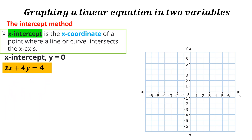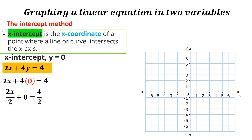Given the equation 2x plus 4y is equal to 4, since we need to set y to 0, we substitute it by 0. It will become 2x plus 0 is equal to 4. Since we will be getting the value of x, we need to apply the division property of equality using 2 as our common divisor to isolate x. So 2x over 2 is equal to 4 over 2, therefore x is equal to 2. This 2 is the x-coordinate of the point where the graph crosses the x-axis, giving us the point (2, 0) as the x-intercept.